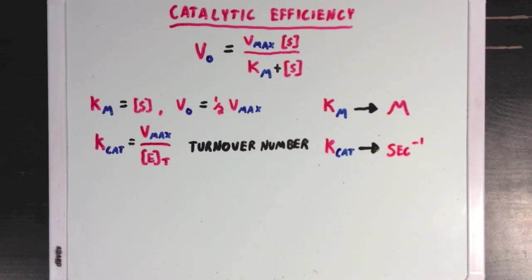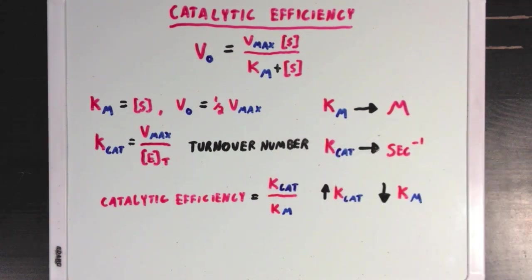So we can define an enzyme's catalytic efficiency as a combination of Km and Kcat. And we do this by saying it's equal to Kcat over Km. So a higher Kcat, or a lower Km, would result in an increase in an enzyme's catalytic efficiency. And every different enzyme has a different catalytic efficiency in certain conditions. And we can use this term to score enzymes on how good they are.